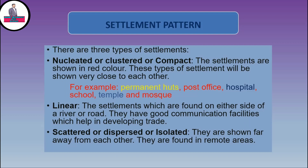The third type of settlement pattern is known as scattered, also known as dispersed or isolated. They are shown far away from each other and they are found in remote places.